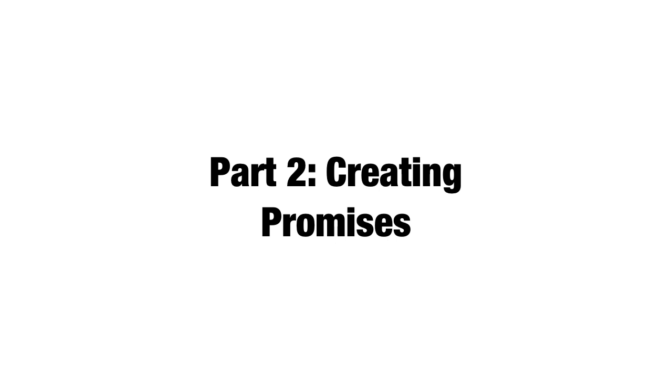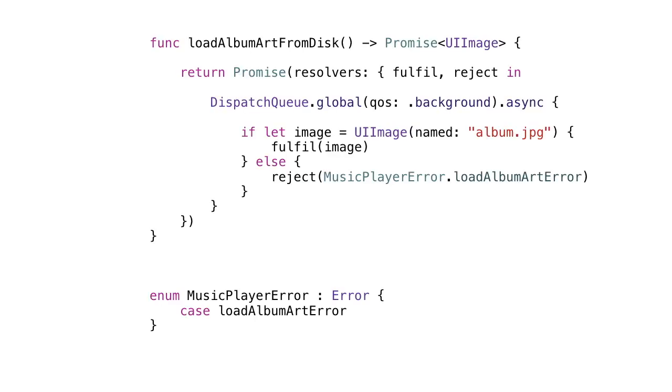That was the end of part one, all about consuming promises. Now we're going to look at how we create promises and return them from our own functions. Exactly how you do this depends on the kind of asynchronous task you want to return from, so we're going to look at a few different scenarios.